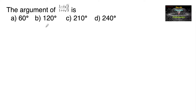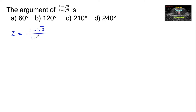Find the argument of the complex number (1 - i√3) / (1 + i√3). Let us consider z = (1 - i√3) / (1 + i√3).